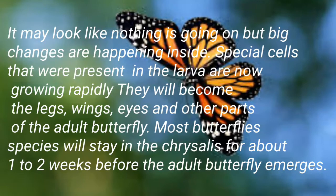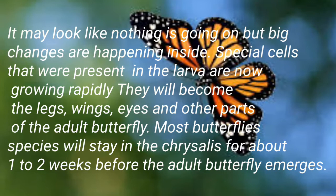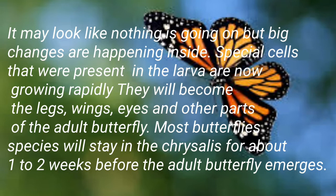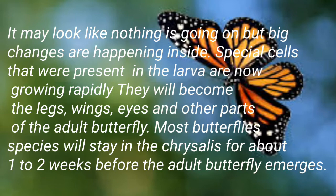It may look like nothing is going on, but big changes are happening inside. Special cells that were present in the larva are now growing rapidly — they will become the legs, wings, eyes, and other parts of the adult butterfly. Most butterfly species will stay in the chrysalis for about 1 to 2 weeks before the adult butterfly emerges.